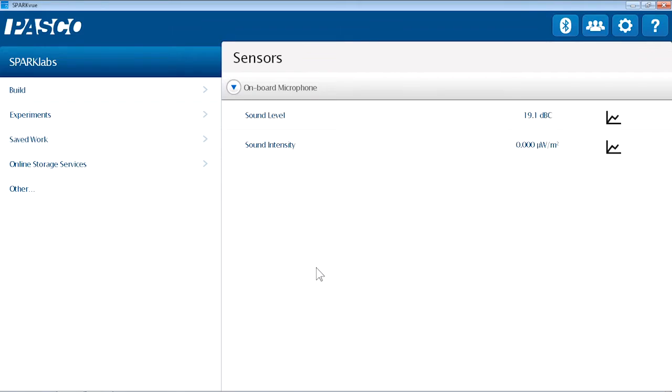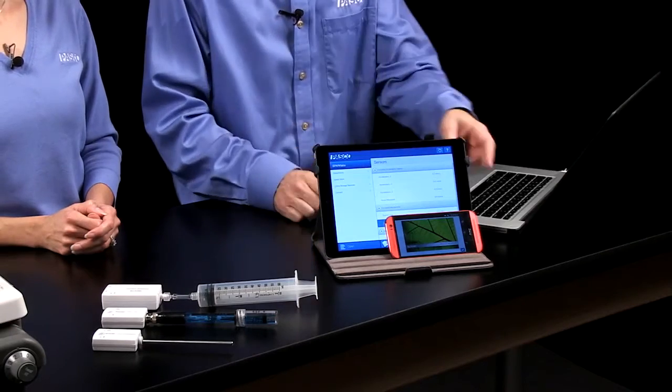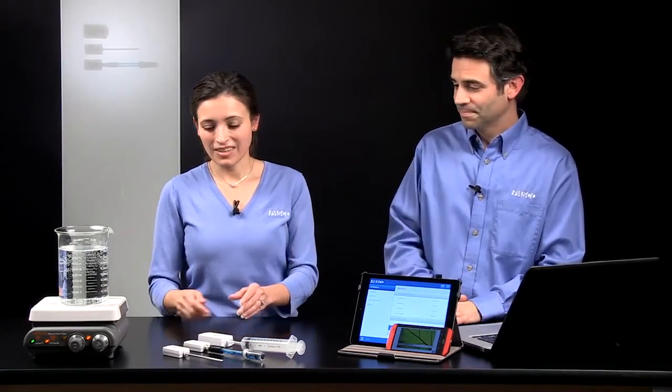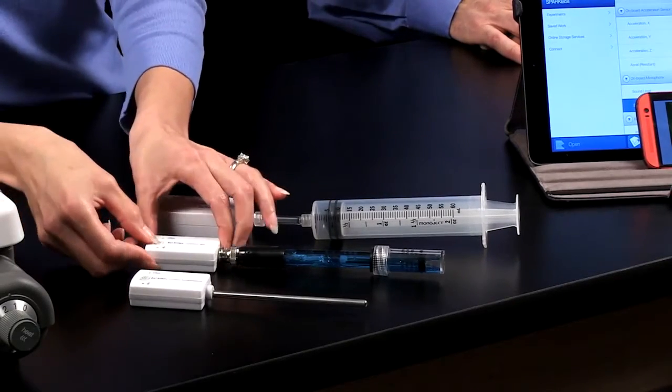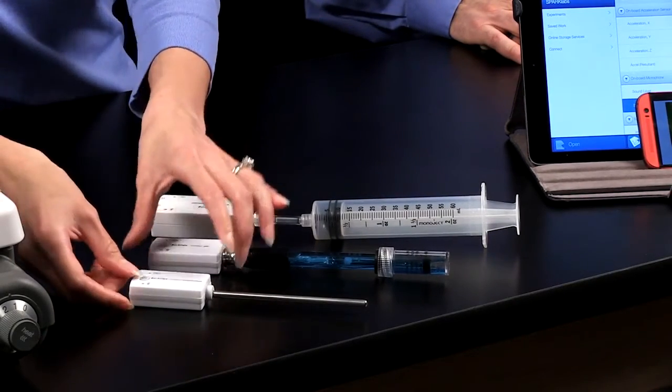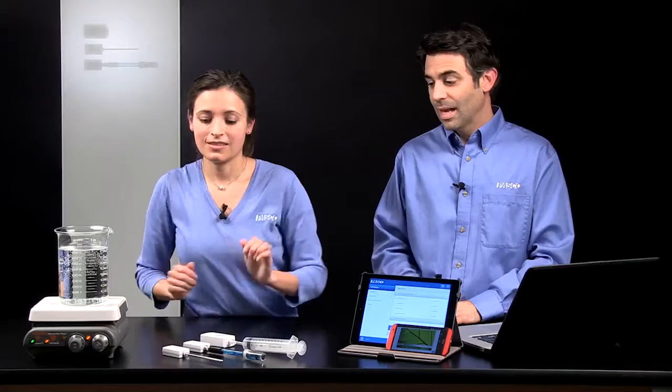And they'll connect to our SparkView software, which is great because it's on all your devices. It's on Macs, PCs, Chromebooks, tablets, and even phones. So to connect, the first thing we need to do is turn them on. So I'm just going to hold the power button down for a second until the red Bluetooth light turns on. And that red light means that it's broadcasting a Bluetooth signal.